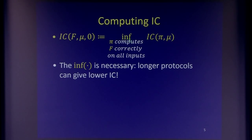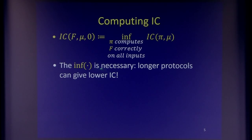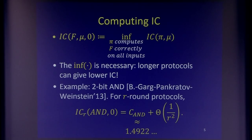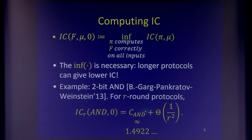IC cannot be brute-forced, unfortunately. The reason is that you have this infimum, and it's there for a reason. I conjecture that for most problems, you cannot realize this quantity with any finite protocol. You get a sequence of protocols that approach the limit as they grow longer and longer, and no specific finite protocol gives you a lower IC. This is already true for the 2-bit AND function, the simplest function that actually computes. For R-round or R-bit protocols, the information complexity gets a second-order term like 1 over R squared — so you need many rounds to approach the limit.